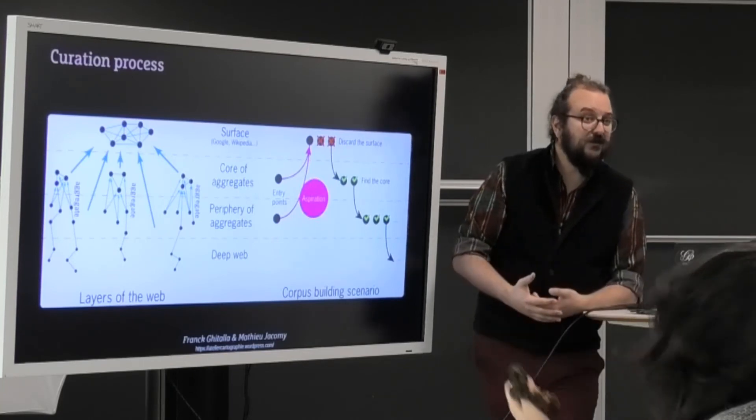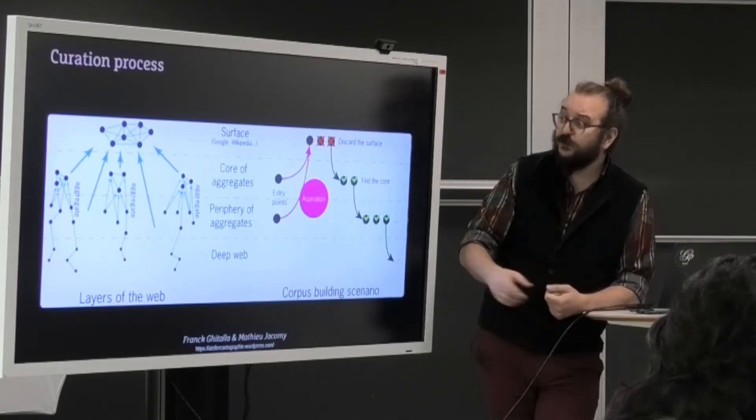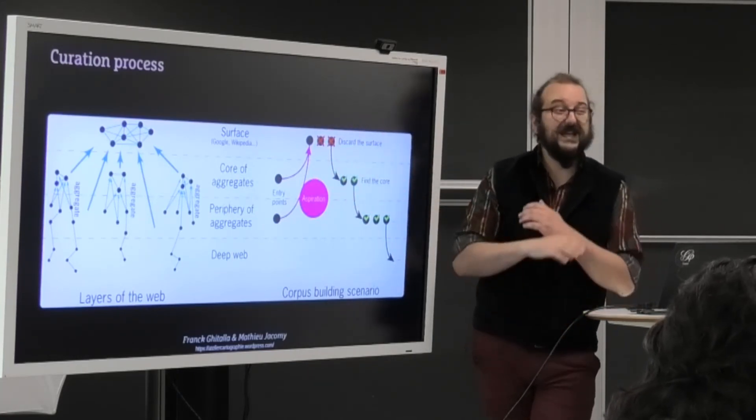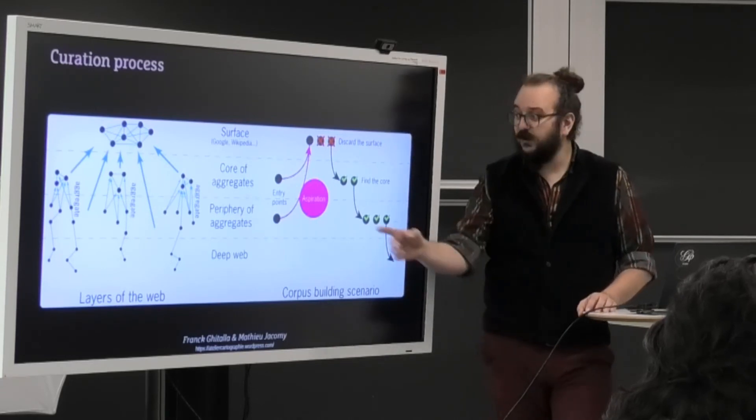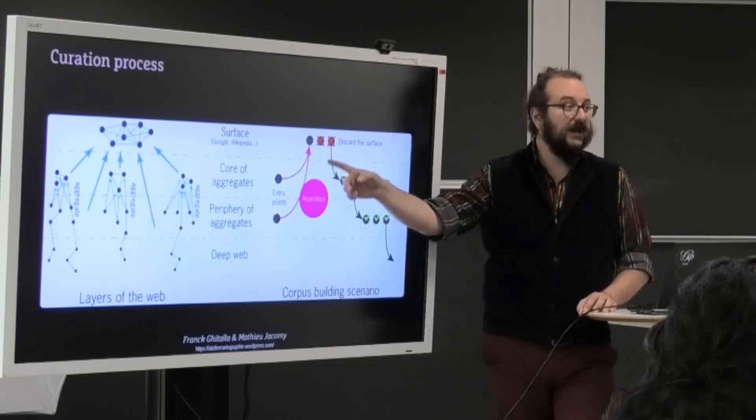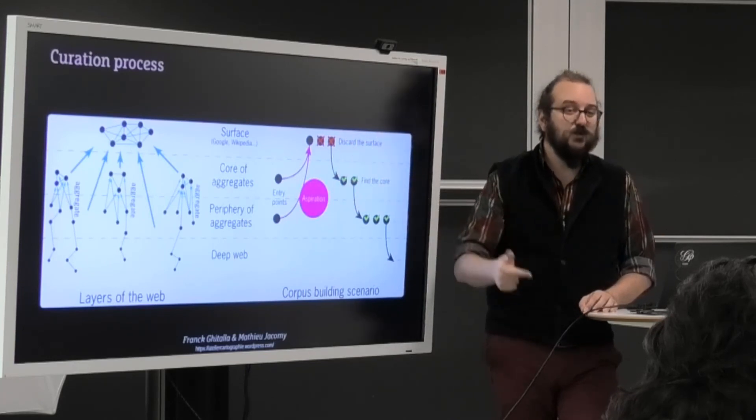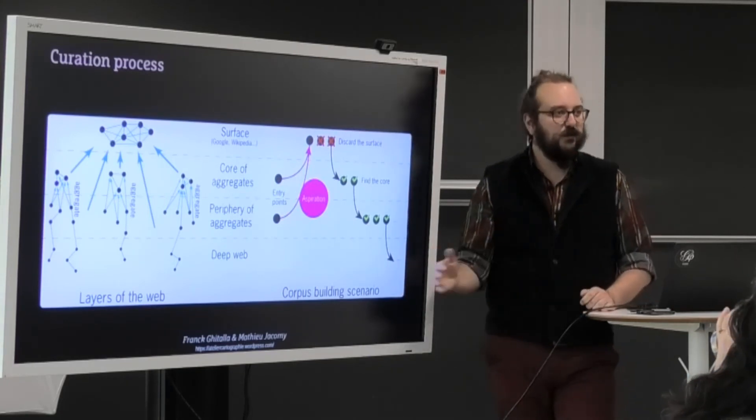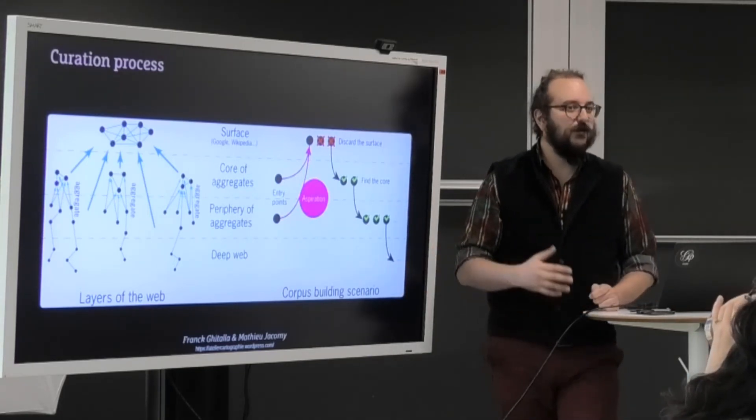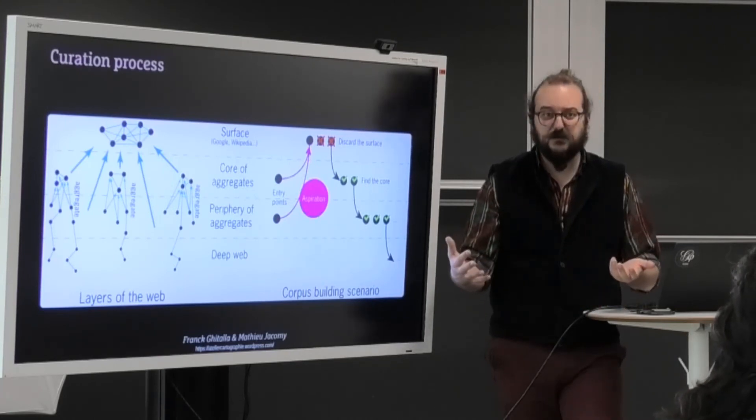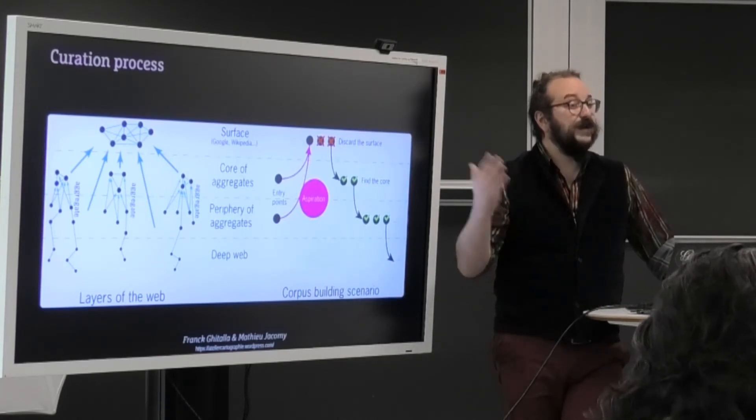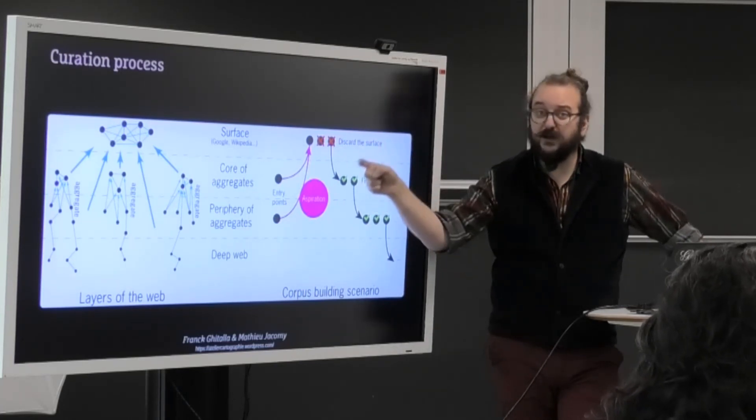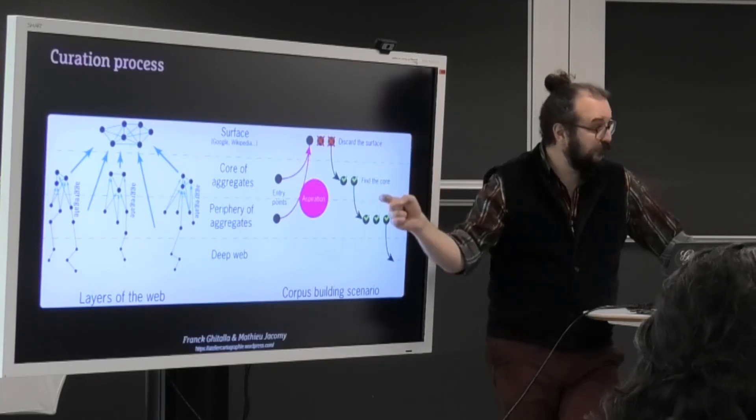The bad news is that even stronger is the attraction to the surface layer, and this is inevitable. So the first resources you will always find are Wikipedia, YouTube, Google, Adobe, Microsoft, and all these super known, super famous web entities that everyone points to for kind of random reasons. And you will have to eliminate these systematically so that you can find the rest, the ones who are cited because they actually matter to your corpus.